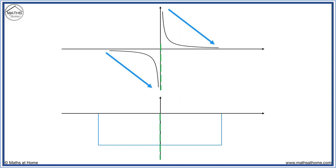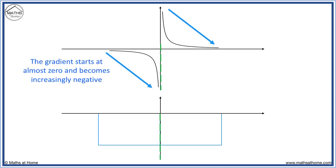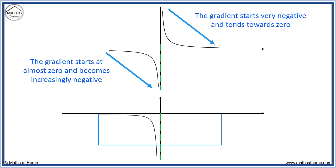We need to look at what the gradient is doing so we can draw it correctly. The gradient starts quite flat, almost at zero, and then becomes increasingly negative. On the other side, the gradient starts very negative as it comes down sharply and then it flattens out, tending towards a gradient of zero. The derivative therefore starts very negative and tends to zero as it goes.